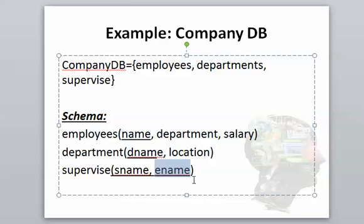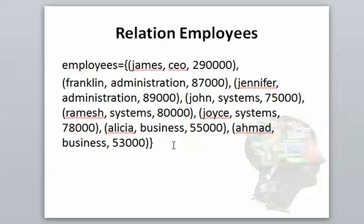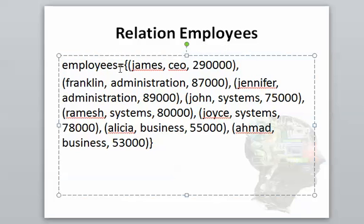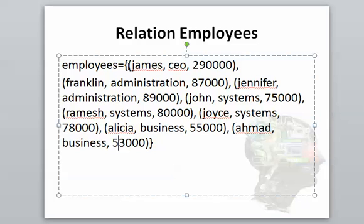It's important to review the schema. The table employees — in the relational model we call that a relation because employees is actually a set of tuples. The first one is a record, or the first row in the table employees. This table has eight elements in the set, meaning there will be eight rows in the table employees.